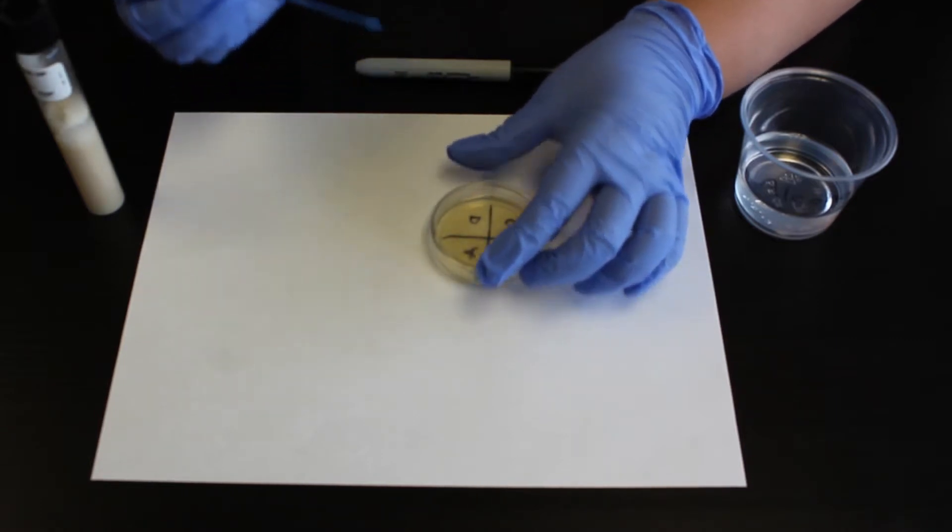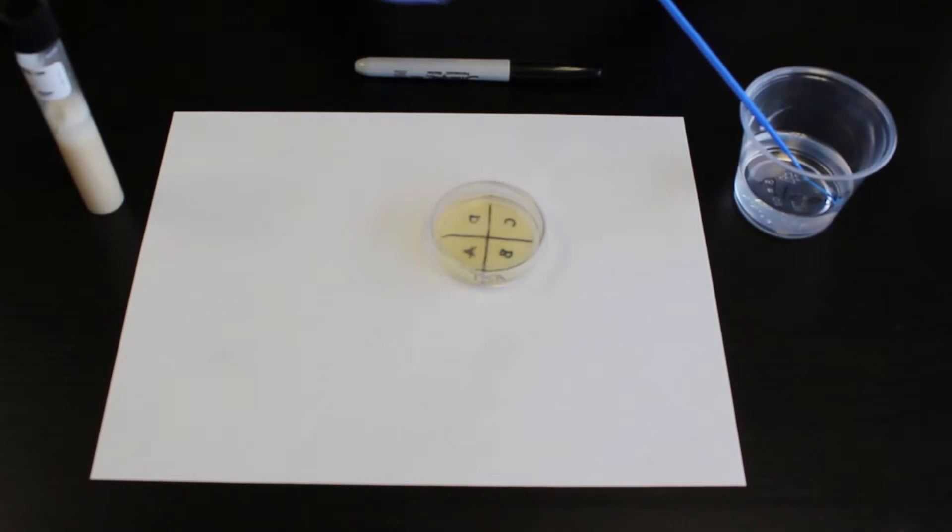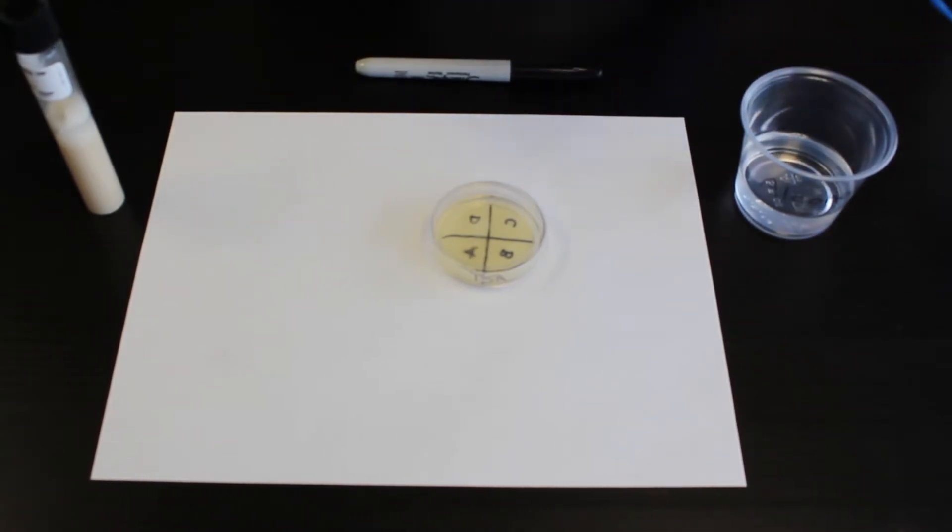Remove the loop, close the lid, return the loop to the beaker of alcohol for 30 seconds. Remove the loop from the alcohol and sling dry.